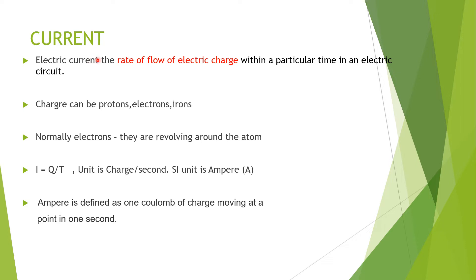First is current. Electrical current is the rate of flow of electric charge within a particular time in an electric circuit. The charge can be protons, electrons, or ions. Protons are the positively charged particles and electrons are the negatively charged particles. Movement of either of these leads to the flow of electrical current. Normally electrons are the major moving particles, so we can say that the movement of electrons is essentially current.